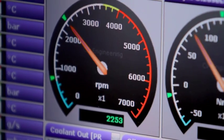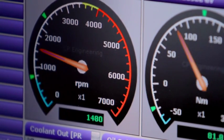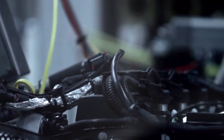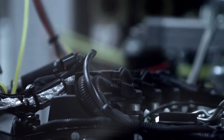This is one of 18 test cells where we run engines from the smallest motorcycle to the largest truck. Typically, a passenger car engine test will last for a couple of hundred hours. Some of the longer engine tests will last for up to a thousand hours. In a typical week, we may use up to 30,000 litres of fuel.